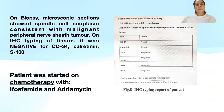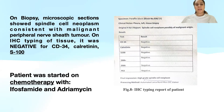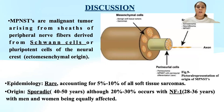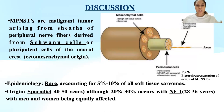On biopsy, microscopic sections showed spindle cell neoplasm consistent with malignant peripheral nerve sheath tumors. On IHC typing of the tissue, it was negative for CD34, calretinin, S100, SMA, EMA, and p63. The patient was then started on chemotherapy with ifosfamide and adriamycin.